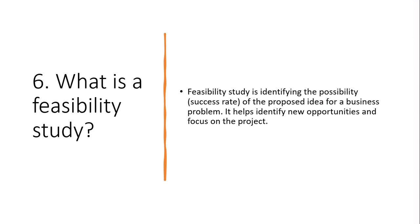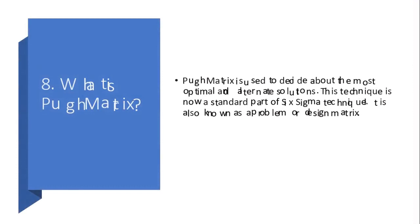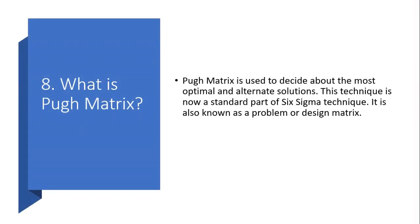Question 7: How can you avoid scope creep? By documenting the scope of the project, following proper change management, informing the effects of any change to affected parties before making a change, and documenting new requirements in the project log. Question 8: What is Pugh matrix? The Pugh matrix is used to decide about the most optimal and alternate solutions. This technique is now a standard part of the Six Sigma technique, and is also known as a problem or design matrix.